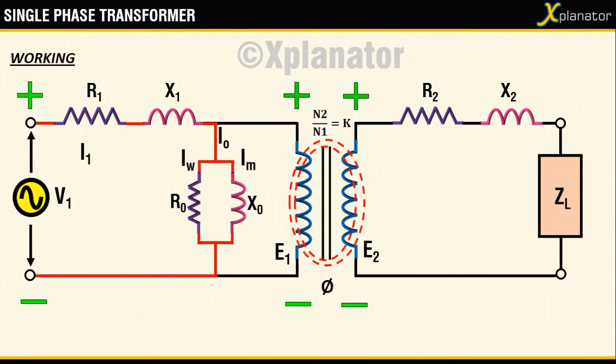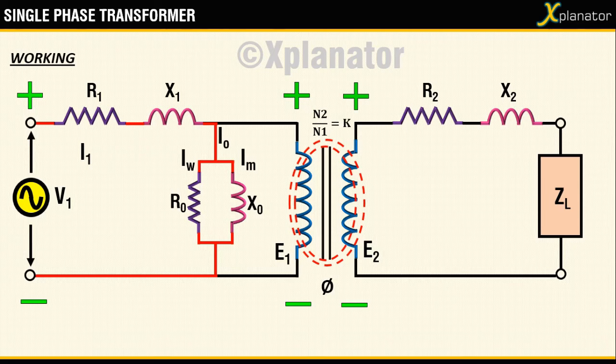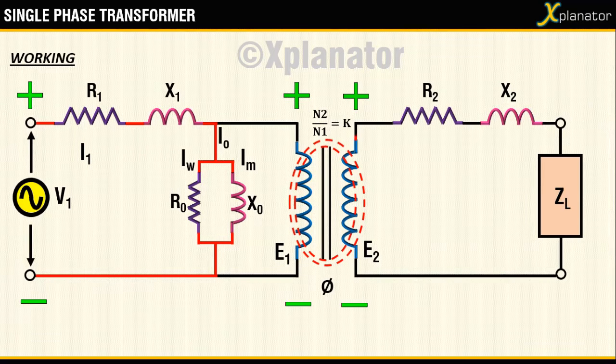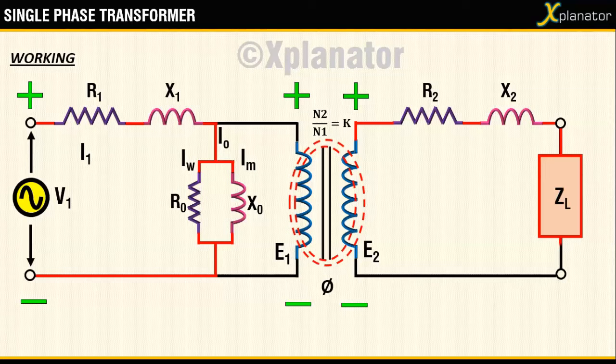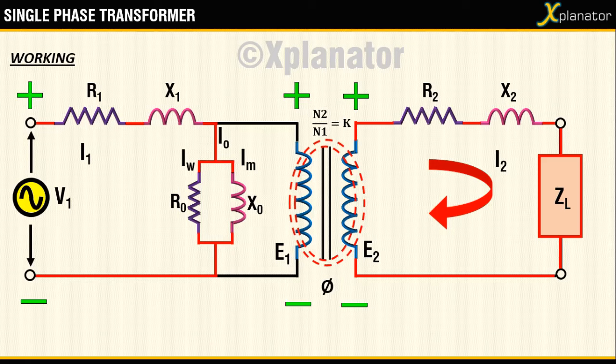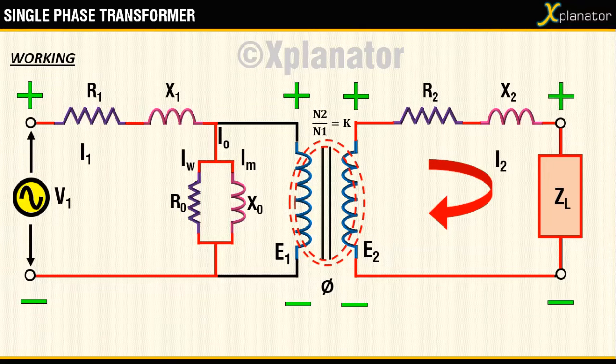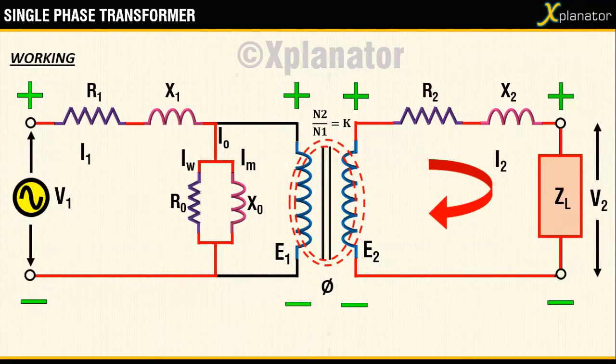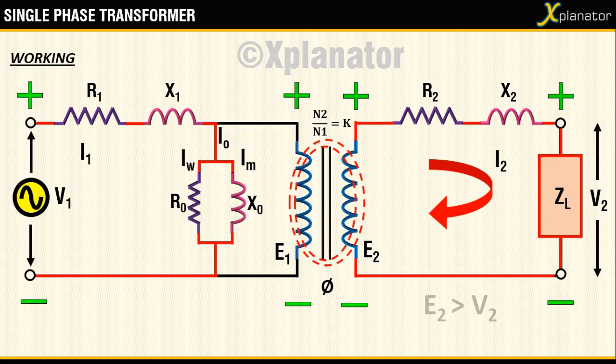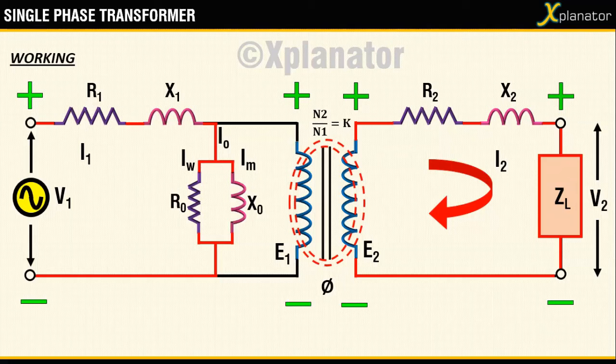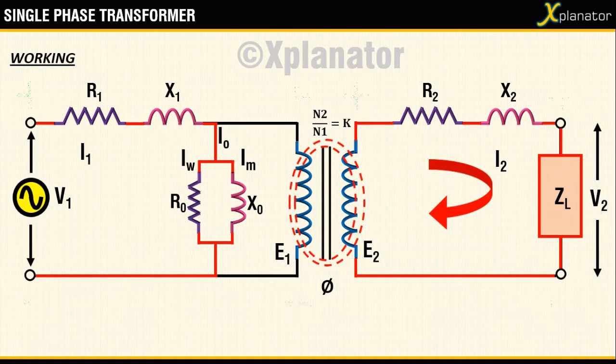As the secondary circuit is closed with the load, current will start flowing through it. We call this current as secondary current I2. The terminal voltage drop occurring across the load is denoted as V2 and due to presence of R2 and X2, V2 is always lesser than E2. This current which will now circulate in the winding will create a flux phi dash of its own which will oppose the primary flux phi.